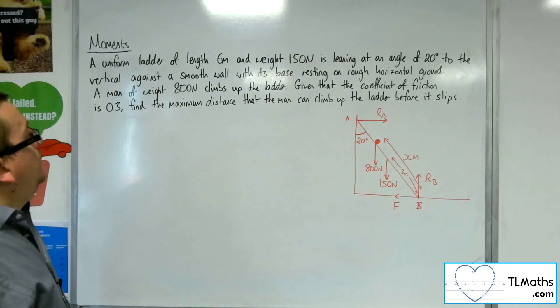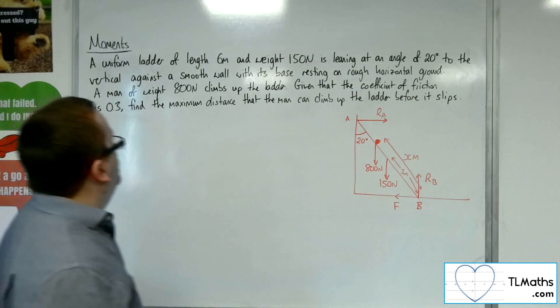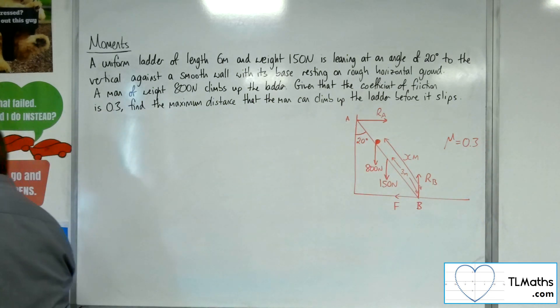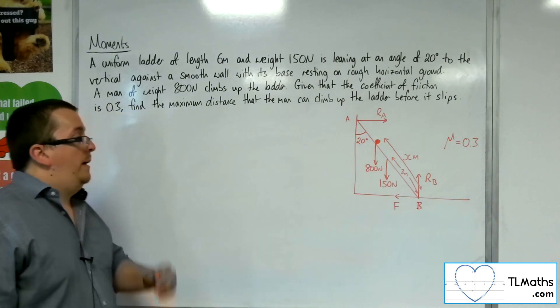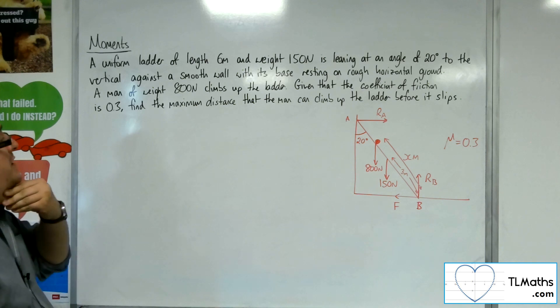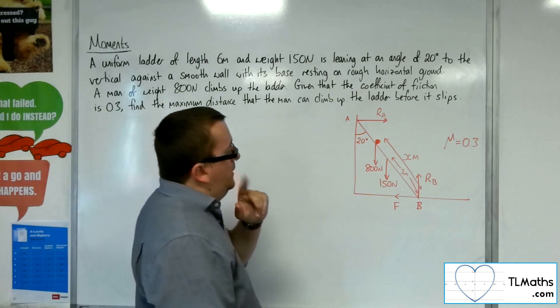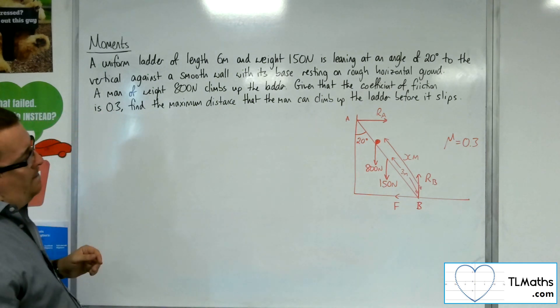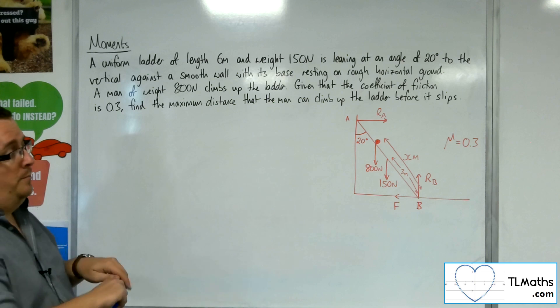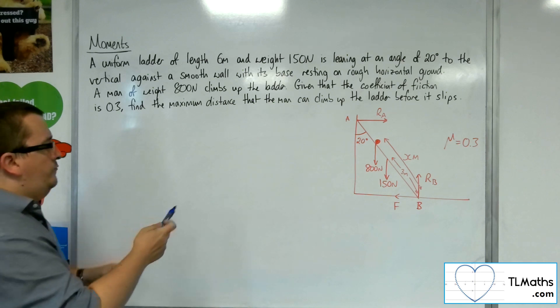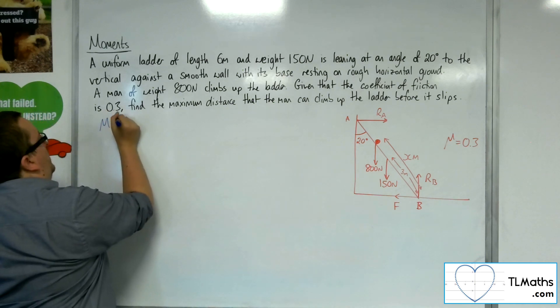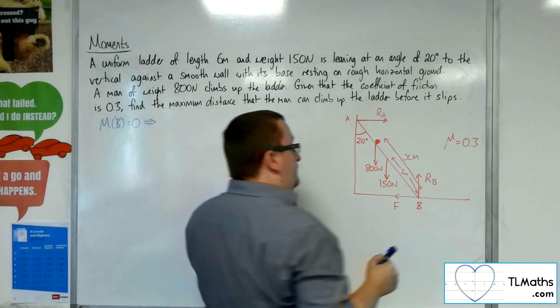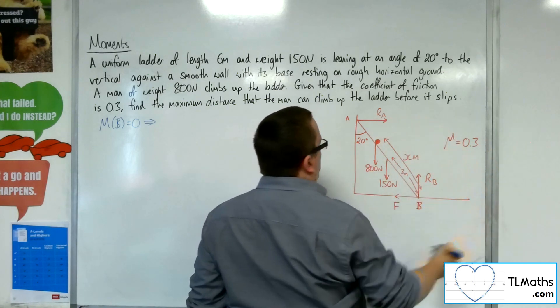We're told that the coefficient of friction is 0.3. So hopefully, with all this information, we should be able to work out the maximum distance, the maximum value x can be. So what are we going to do first? Well, let's take moments about B. So if I take moments about B, then what have I got? Well, I've got RA, which is going around that direction, so clockwise, so it's negative.